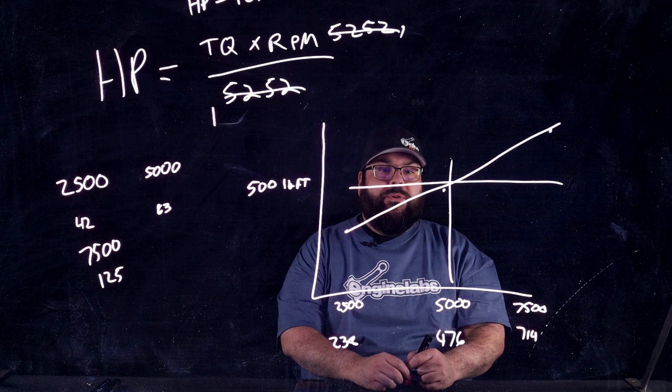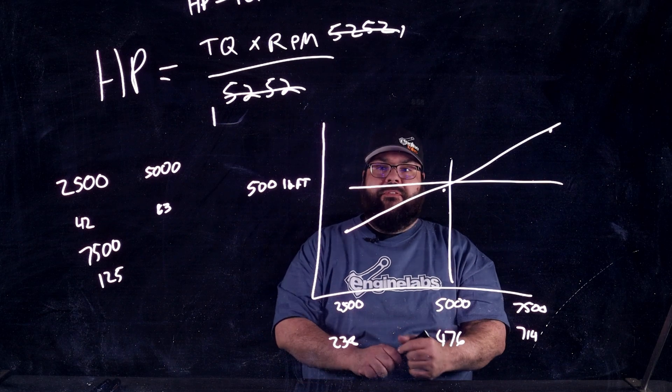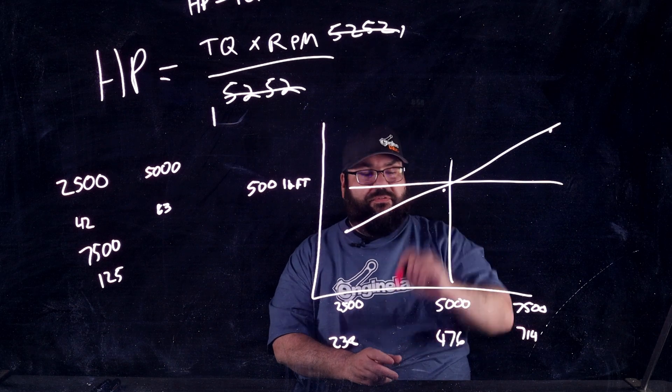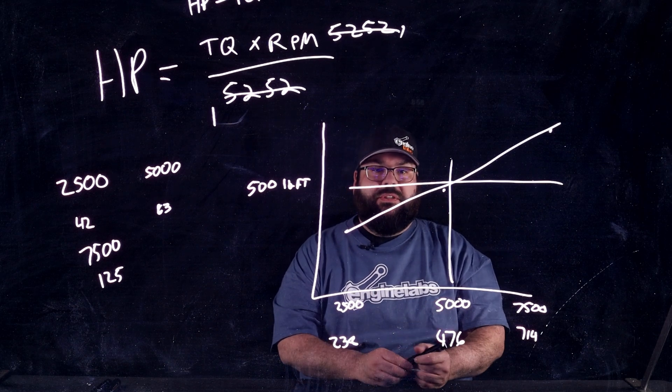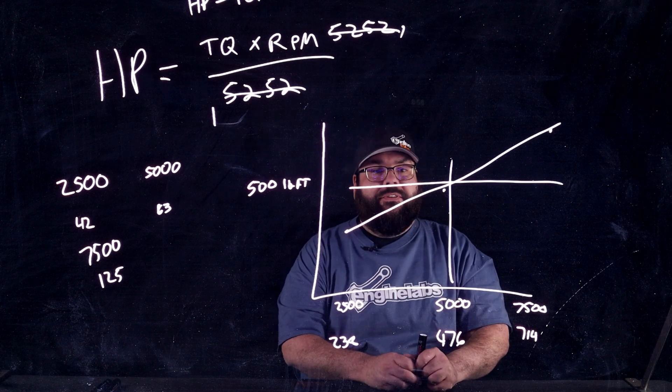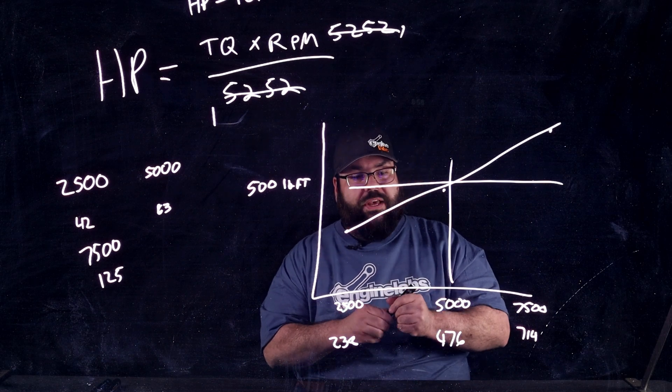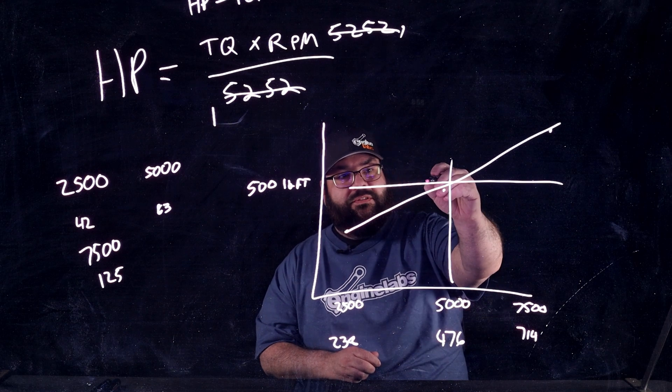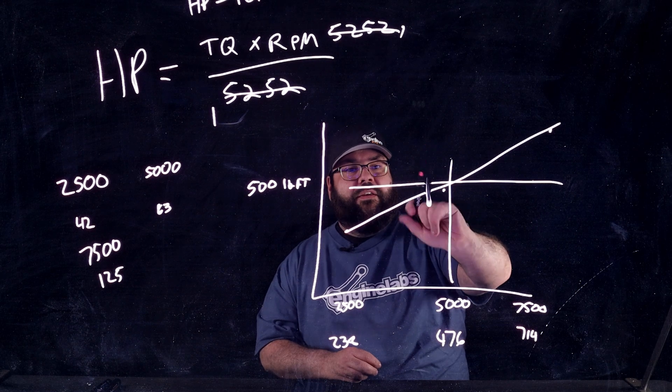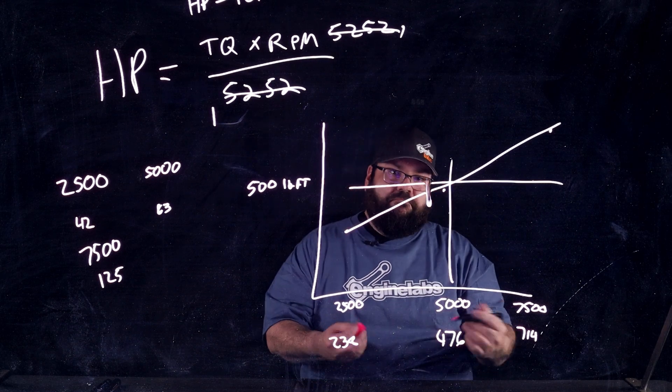Now, what do we do if you have a graph and you see for some reason it does not cross here right at 5,252? Well, one of two things. One, the graph may not go all the way to 5,252. So, if you only ran up to, say, 4,000, you see right there. Actually, let's wipe that off. They never meet. They never cross. Fair enough.